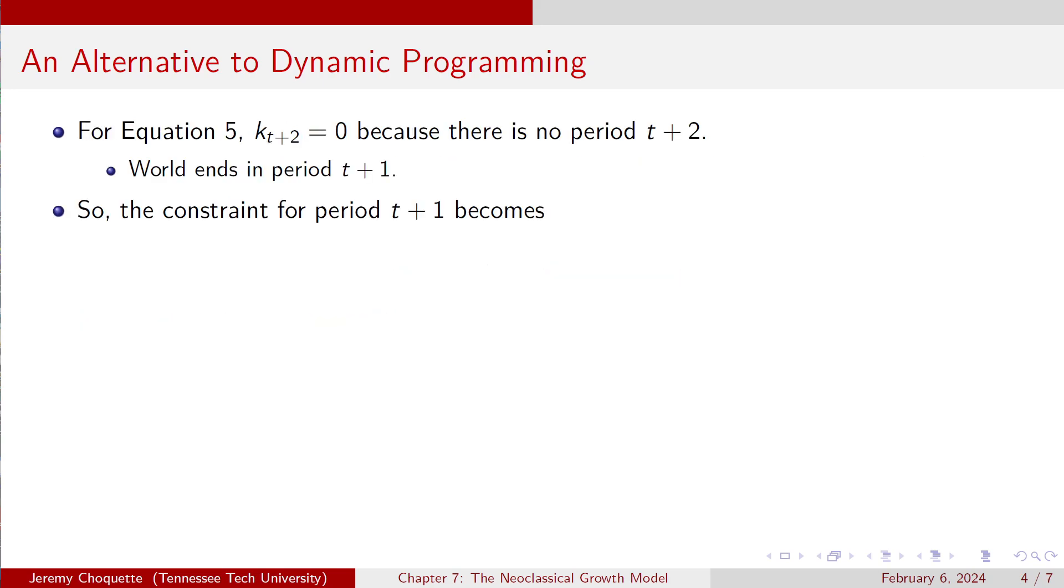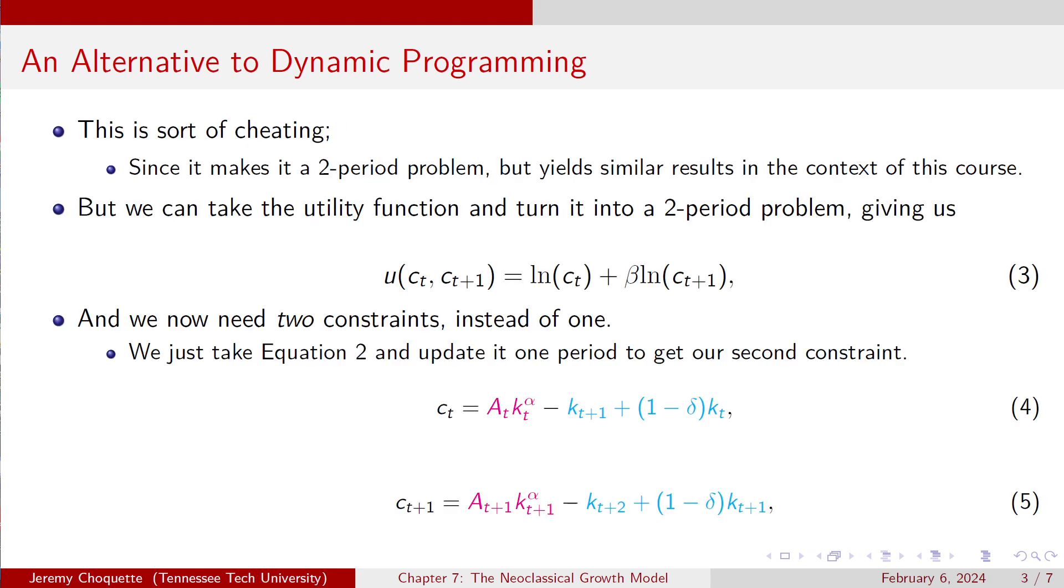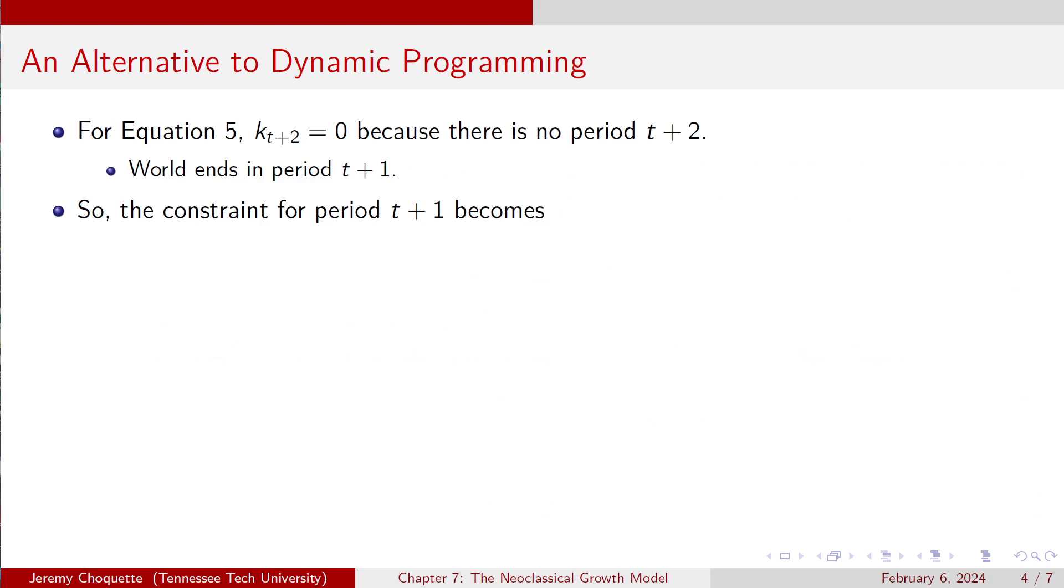Wait a minute. There's no t plus 2, right? It's a two-period problem. Just like what you saw in Chapter 5. It's just the constraint's different. Actually, it's the exact same thing you saw in Chapter 5. It's just a different constraint. The world ends in t plus 1. So the constraint for period t plus 1 is simply at plus 1 times kt plus 1 to the alpha plus 1 minus delta kt plus 1. There you go.